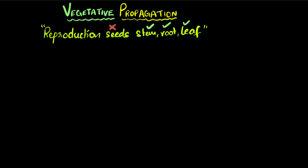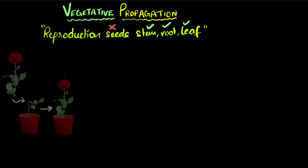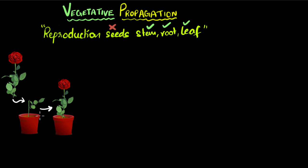For example, if you take a rose plant, what you can do is cut a stem and sow it, then add water and all the necessary stuff, and it can grow into a new rose plant. This is vegetative propagation because we use the vegetative part — the stem, not the seeds — to grow a new rose plant.